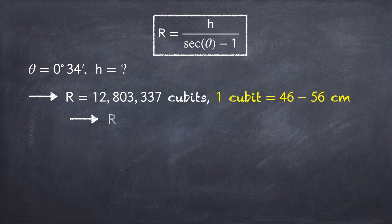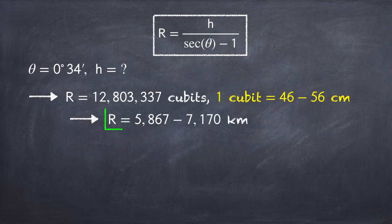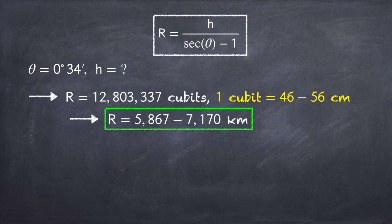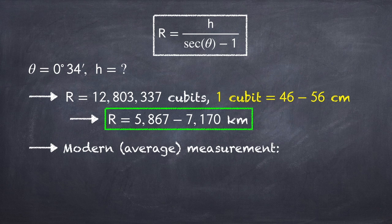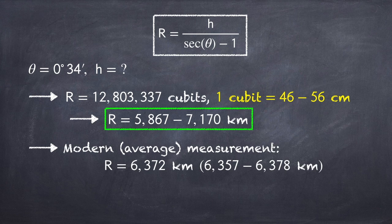So converting this to kilometers, we get that he measured the radius of the earth to be somewhere between about 6,000 to 7,000 kilometers.